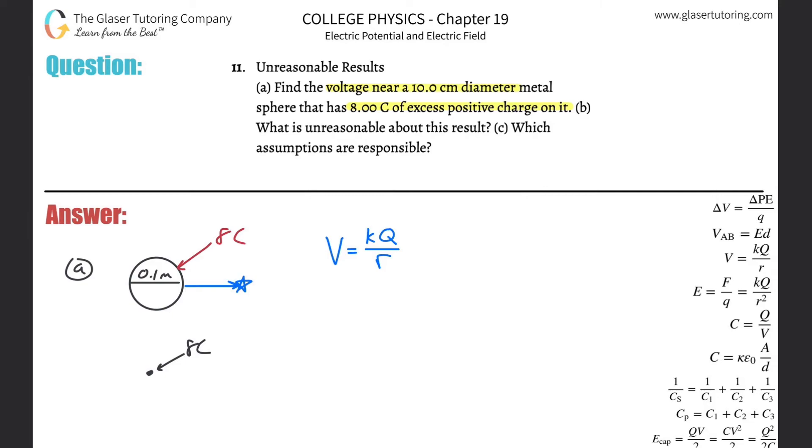So what do you notice about this formula? As we get closer and closer, meaning as r gets smaller and smaller, V gets larger and larger. As r approaches essentially zero, what does V approach? It approaches infinity.